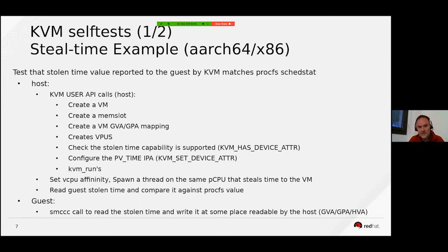What this test does on the host is call a set of KVM user API functions: it creates a VM, creates memslots, creates some guest VA/guest PA mappings within the guest, and then creates the vCPUs.